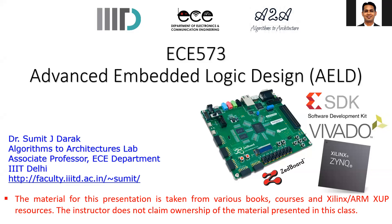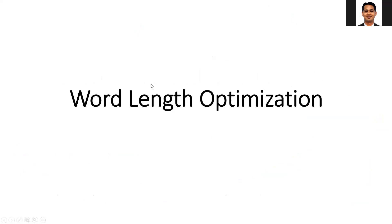In this lab, we are going to discuss how we can further improve the performance of the matrix multiplication via word length optimization. Word length optimization is important when you are implementing any algorithm on hardware such as FPGA and ASIC. In the processor-based implementation, the word lengths are limited.